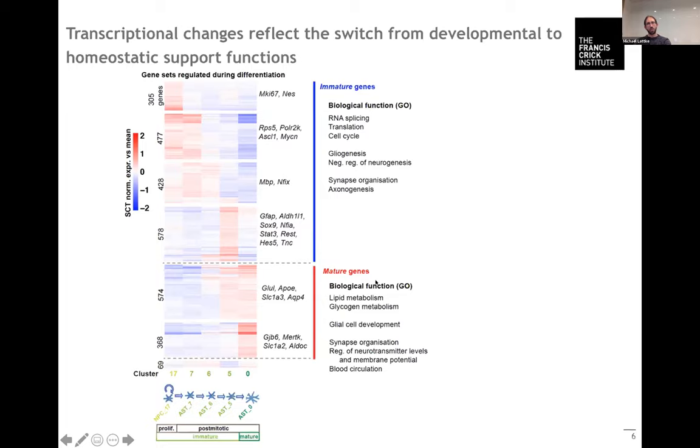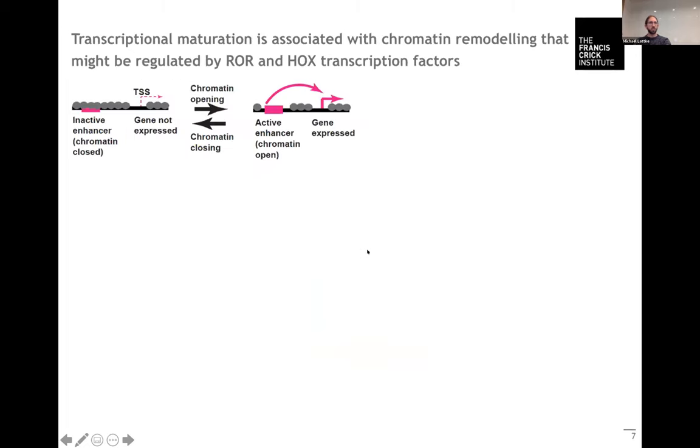The question was then how are these transcriptional changes that we find regulated. One important mechanism that regulates these long-term transcriptional changes during cellular differentiation processes is the remodeling of the epigenetic landscape, the activation or inactivation of stage-specific enhancers. As a proxy for this activation of enhancers we analyzed chromatin accessibility.